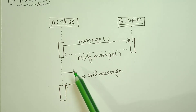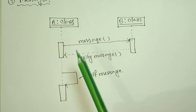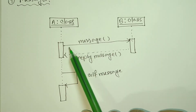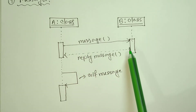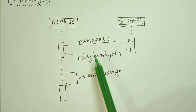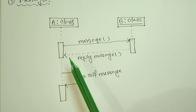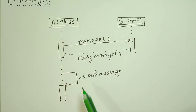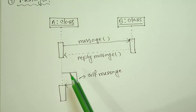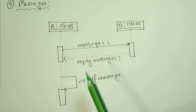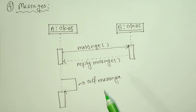A dotted arrow line is used for a reply. If you have a self-message, you will be able to send a self-message. So you will be able to focus on these three steps.